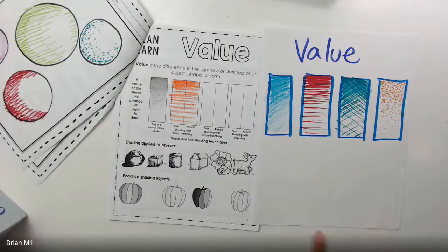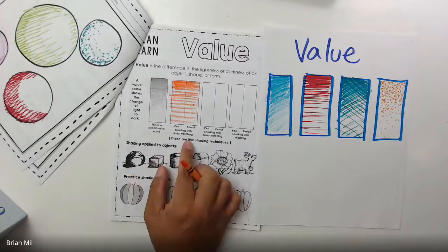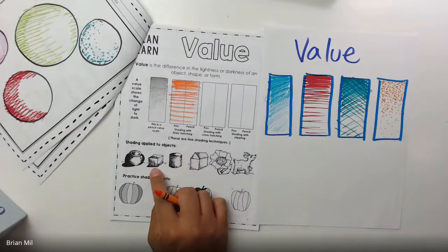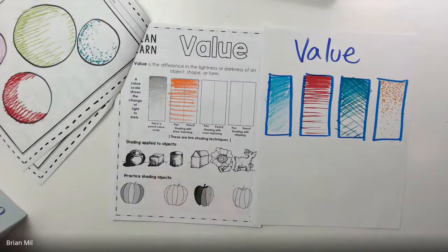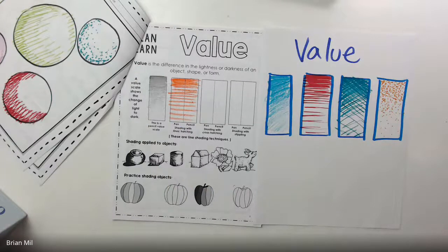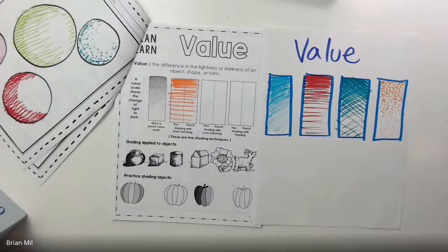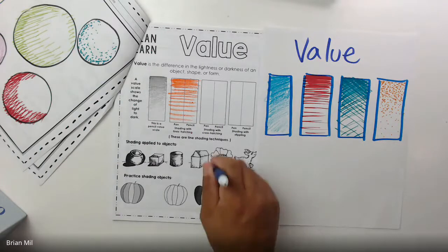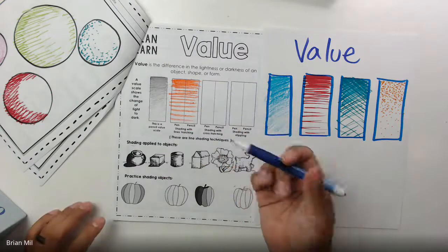So it's not as great as a pencil value scale like this, but hatching has to deal with lines. So that's what you see over here. And then the next one is called crosshatching. I think I have a pen somewhere. Let me find a pen. Yep, I got a pen. So let me try to do my best in pen.